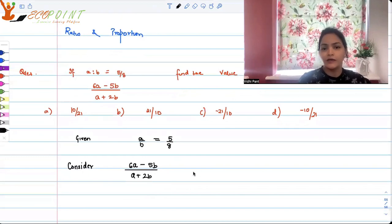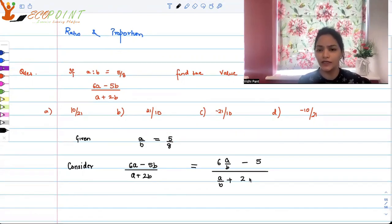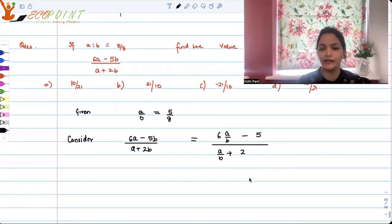You consider this expression. Let's divide throughout by b. So this is same as saying 6 times a upon b minus 5b upon b, that gives you just 5, upon a upon b plus 2b upon b gives you 2. In other words, we can also say that we have just taken b common from numerator and denominator. So b cancels and this is what we are left with.